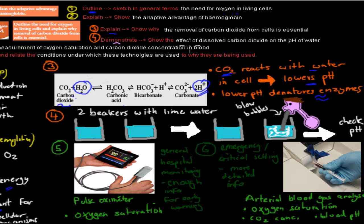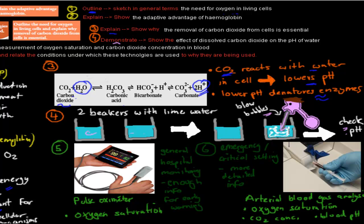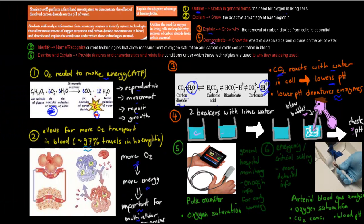The next dot point was 'demonstrate' — show the effect of dissolved carbon dioxide on the pH of water. We have two beakers: a control and one with lime water that we bubble into with a straw. When we bubble into it we add carbon dioxide — lime water changes to a whitish colour, confirming the presence of carbon dioxide. Checking with a pH meter, the bubbled sample has a low pH because the water has combined with carbon dioxide to lower it.